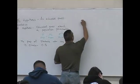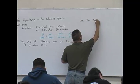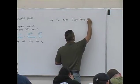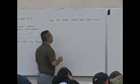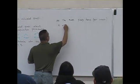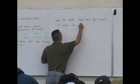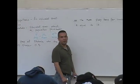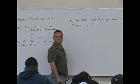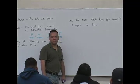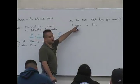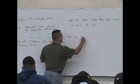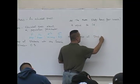Another example: 'the mean study hours per week is equal to 14.' This is another educated guess about a population parameter. What's the parameter in this hypothesis? The mean — because it says 'the mean.' Another example: 'the proportion of students who smoke is less than 0.35.' What parameter are we talking about? The proportion.